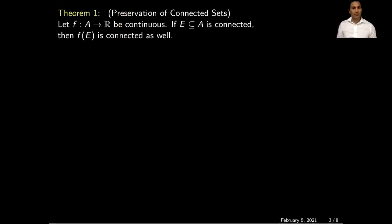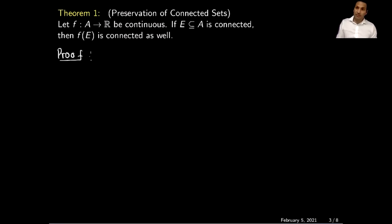Next we will prove an important result on connected sets. The statement of this theorem is: if f is a continuous function and E is a connected set, then the image of f over the set E will also be a connected set. Let's prove this theorem.